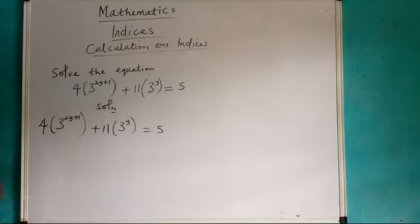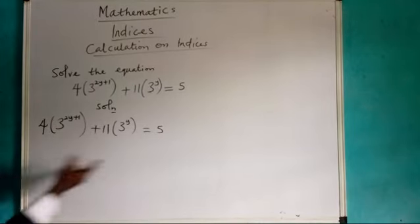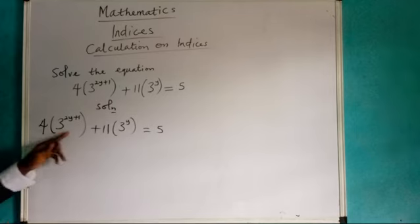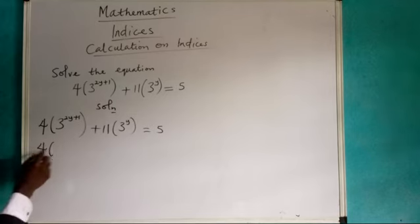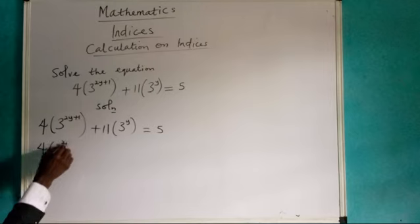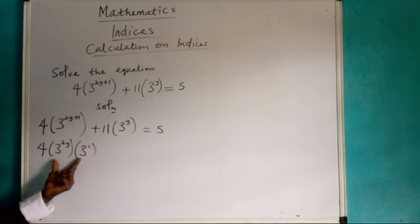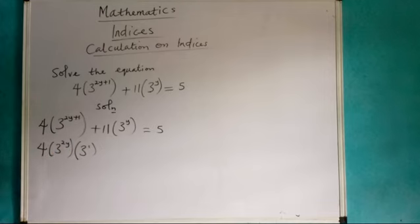I need to move this one over to the other side. We've got 4, and here we can solve it as 3 power 2y and we still have 3 power 1. For these two we are going to take one base and add up the indices of that base.